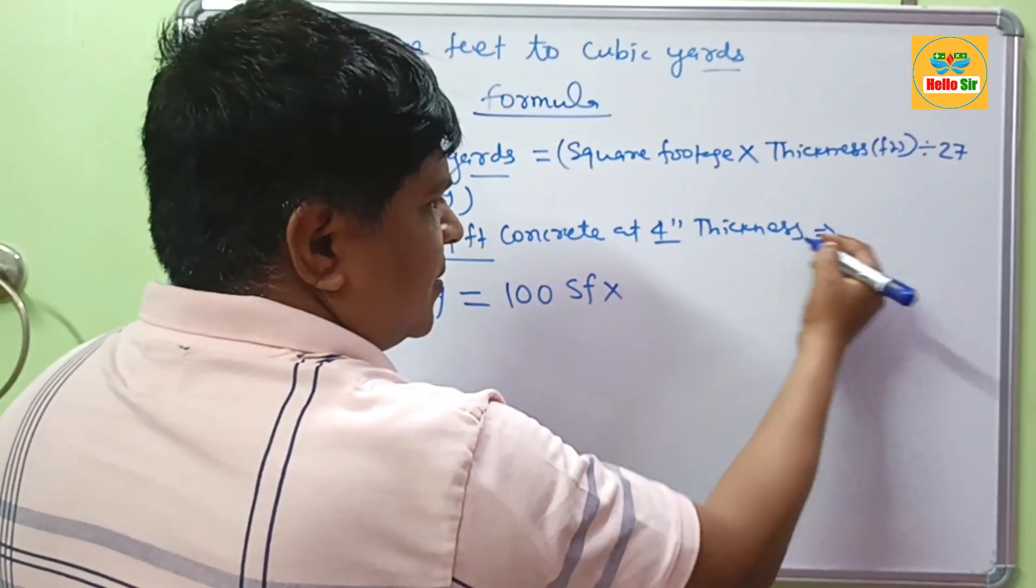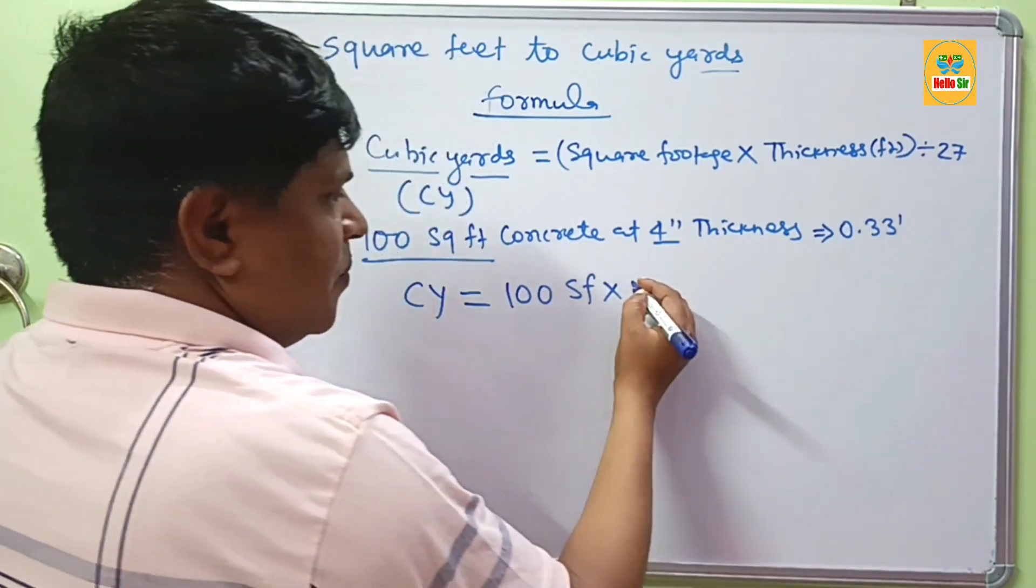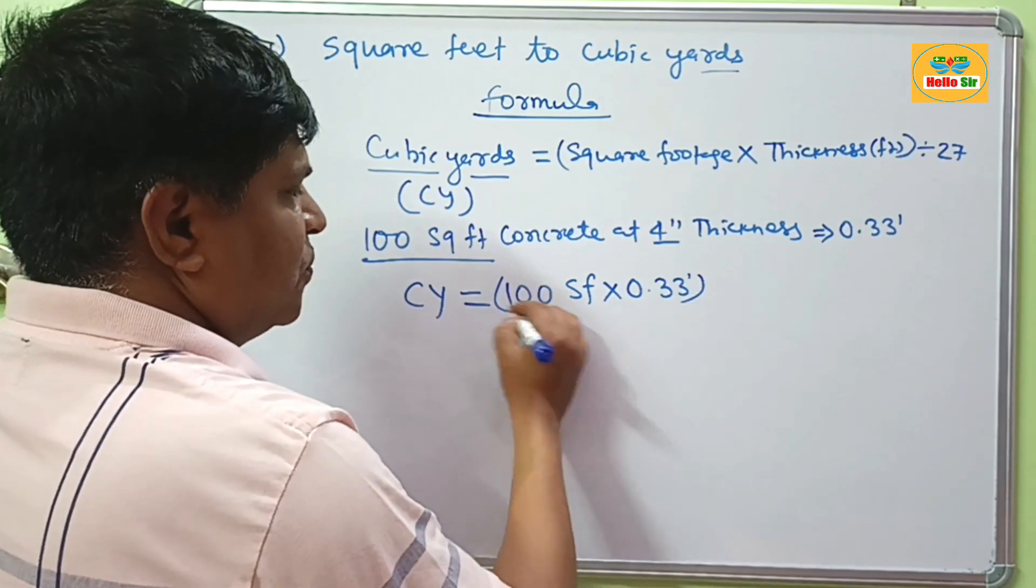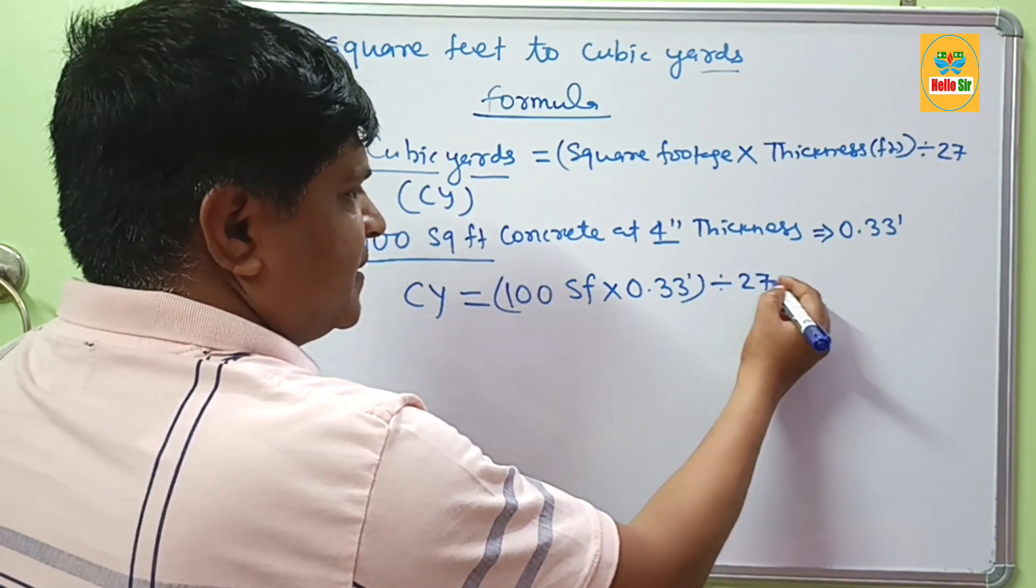You should convert this to feet. This will be 0.33 feet. Multiply by 0.33 feet, and the total cubic feet is divided by 27.